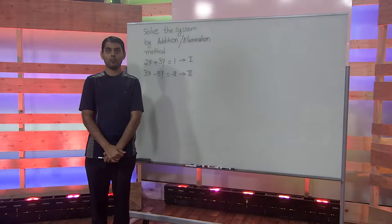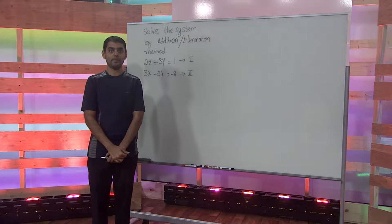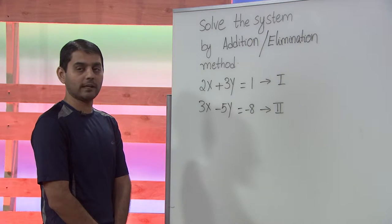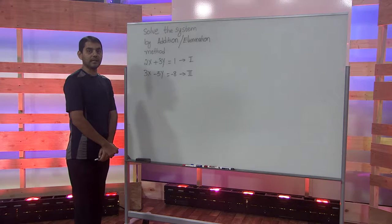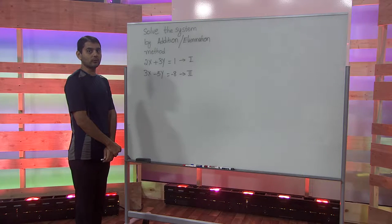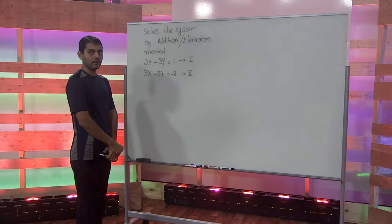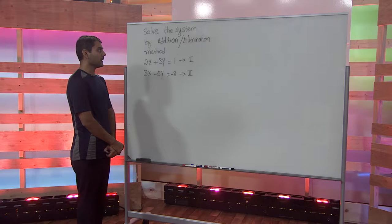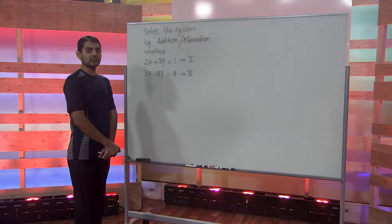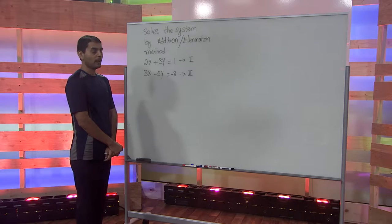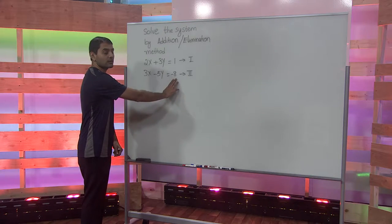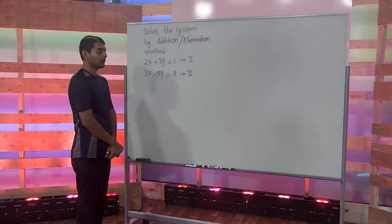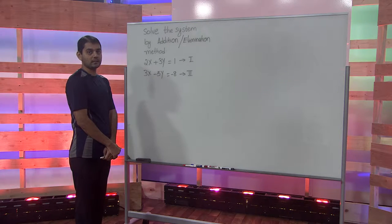In this lecture, we solve the system of equations using the addition method. The system given to us is 2x plus 3y equals 1, and 3x minus 5y equals negative 8. The addition method is also referred to as the elimination method. To use it, we want the system of equations in standard form, with variable terms on the left-hand side and numbers on the right-hand side. This given system is already in standard form.